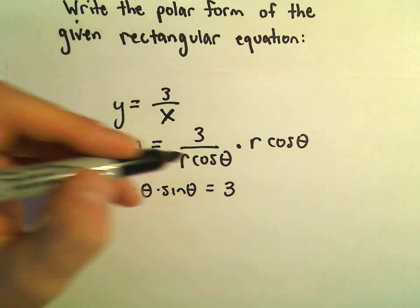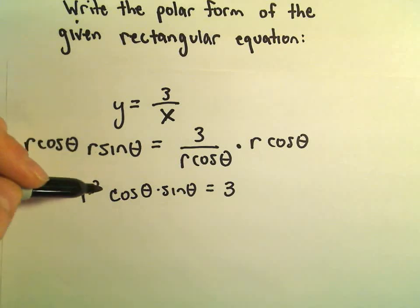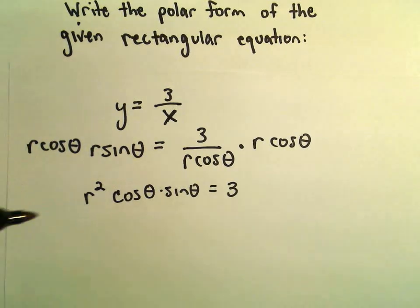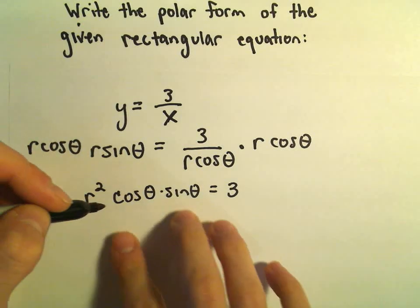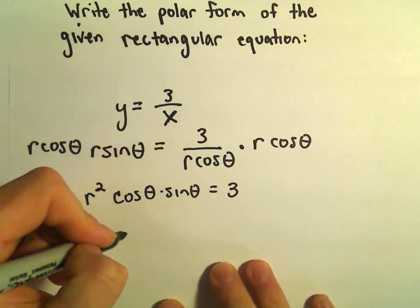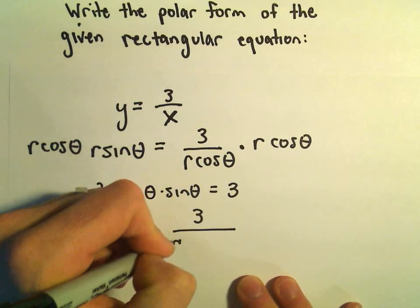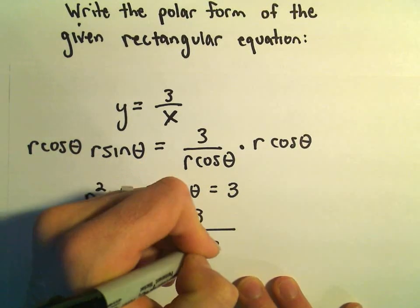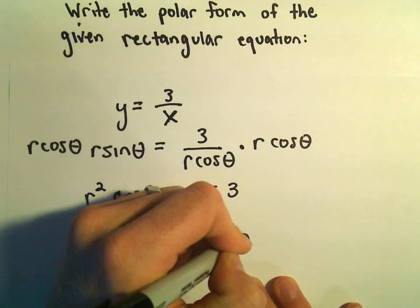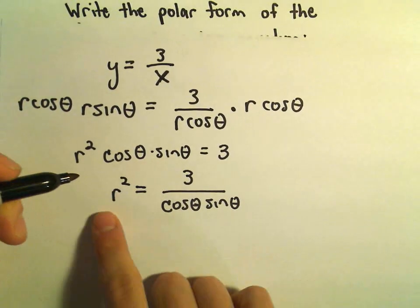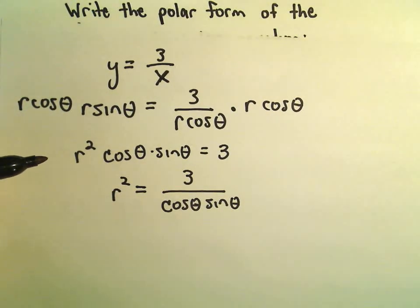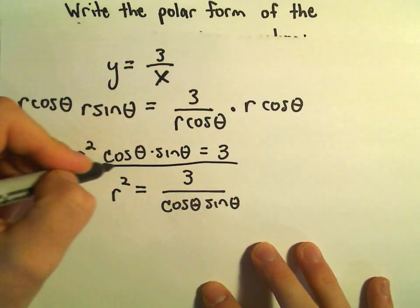So maybe we could have just left the cosine theta on the bottom. So maybe I'll undo it all, actually. Let's divide both sides by cosine theta sine theta. So that would give us r squared equals 3 over cosine theta times sine theta. And again, now we've kind of got the r left over by itself. Again, I think I would leave it right there.